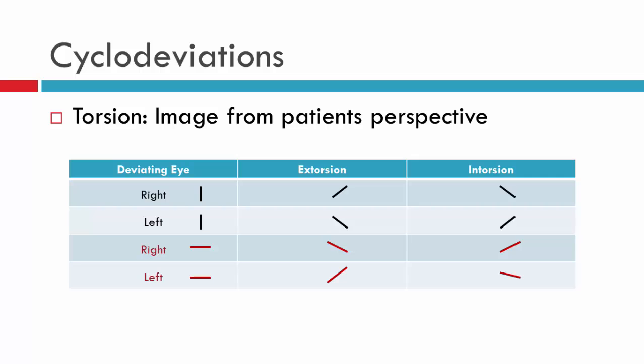Let's now go through how a patient experiences torsion, or more specifically how they will report the image being tilted, particularly when you present them with a linear line. I'll take you through what the patient will report if you present to them a vertical line versus a horizontal line. This is important in particular in relation to using investigations such as double Maddox rod or Bagolini striped glasses, which we'll see in a moment.